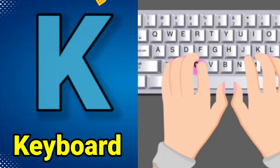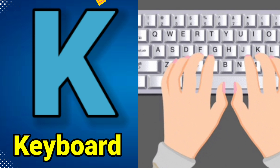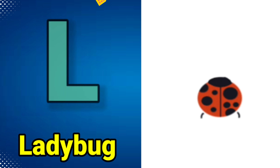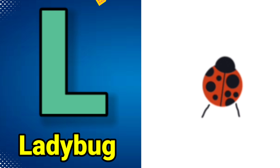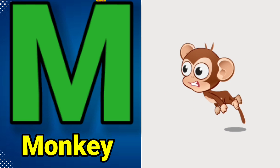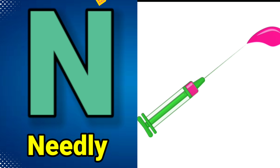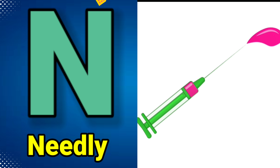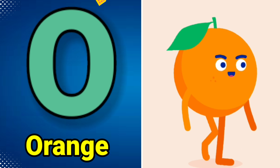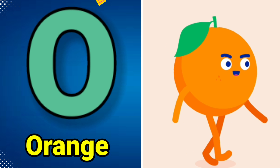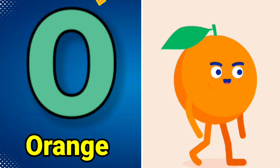K is for Keyboard, K-K-Keyboard, K-Keyboard. L is for Ladybug, L-Ladybug. M is for Monkey, M-Monkey. N is for Needle, N-Needle. O is for Orange, O-O-Orange, O-Orange.